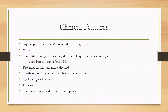The presentation is fairly slowly progressive. Patients usually start displaying the disease around the age of 20 to 50, and it's more common in women than men. The symptoms consist of trunk stiffness and generalized rigidity, muscle spasms, and a wide-based gait. Sometimes it's not generalized rigidity but focal rigidity, with the proximal muscles more affected.